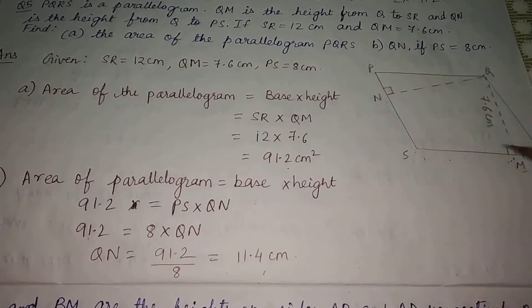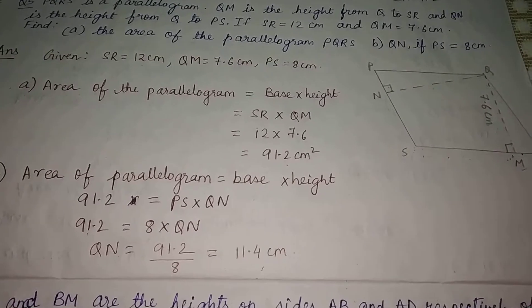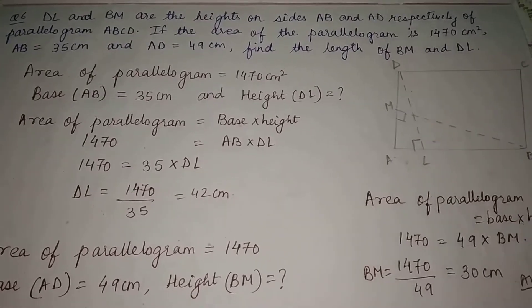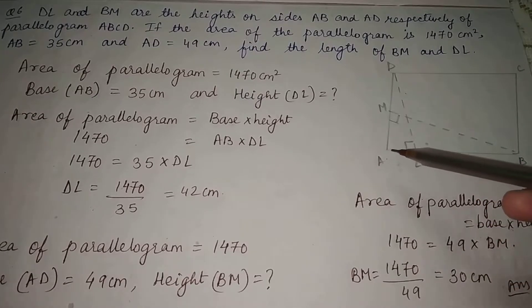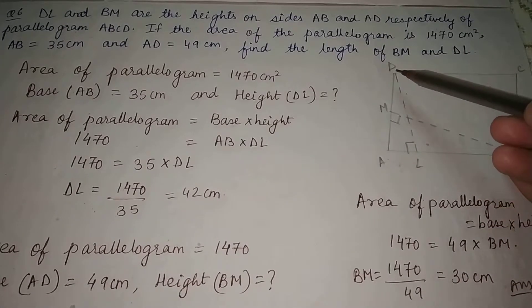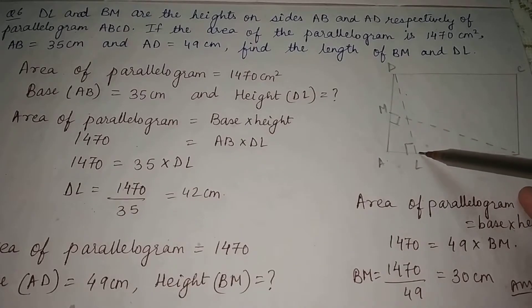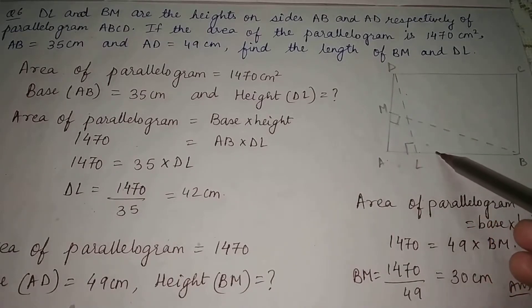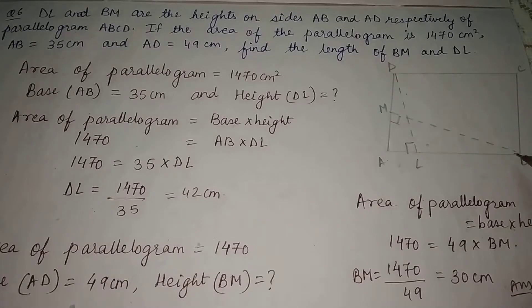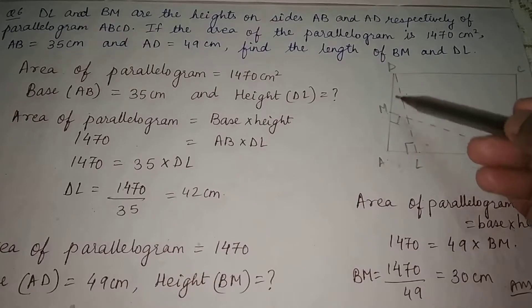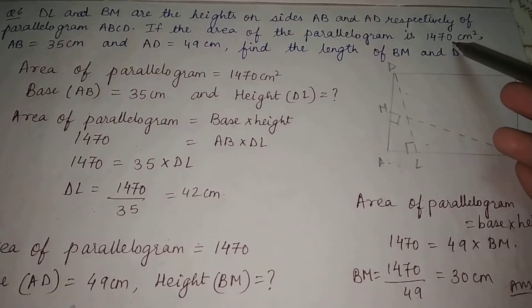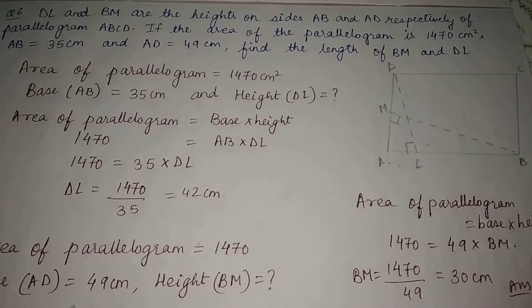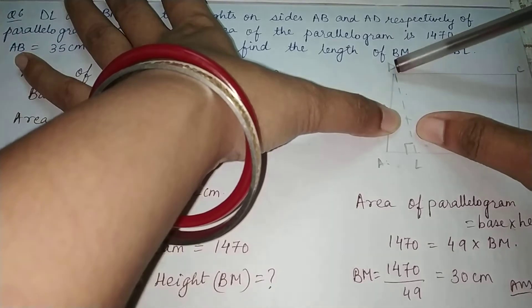Now let us see question number 6. We have parallelogram ABCD. DL is the height perpendicular to AB, and BM is the height perpendicular to AD. The area of the parallelogram is given as 1470 cm². AB is given as 35 cm and AD is given as 49 cm.